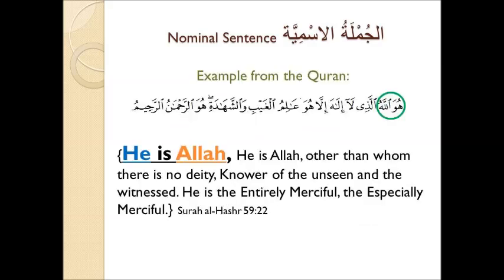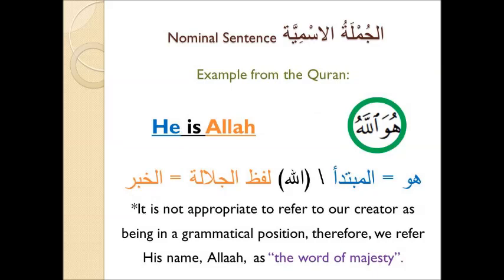Here is an example from the Qur'an: huwallahul ladhi la ilaha illahu, alimul ghaybi wa shahada, huwarrahmanul raheem. But we are going to focus on the first part of the sentence: huwallah — he is Allah. The word huwa, meaning he, is in the place of the mubtada. And the lafb al-jalala, which is the name of Allah, is in the place of al-khabr. And it is not appropriate to refer to our creator as being in a grammatical position; therefore we refer to his name as the word of majesty, lafb al-jalala.